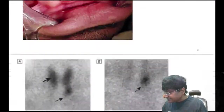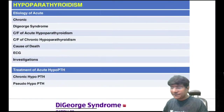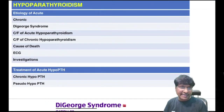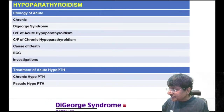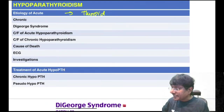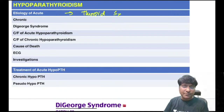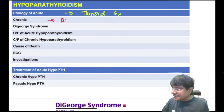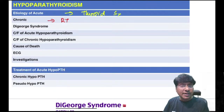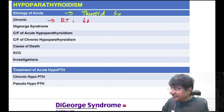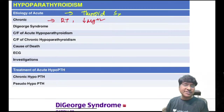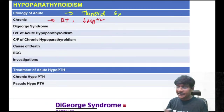Hypoparathyroidism: acute hypoparathyroidism is caused by thyroid surgery. Chronic hypoparathyroidism can be secondary to radiotherapy to the neck for lymphoma or hypomagnesemia (magnesium is required for PTH release from parathyroid gland).